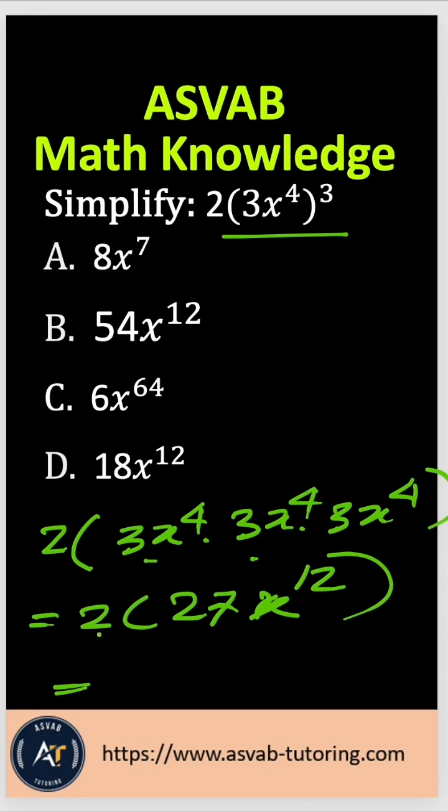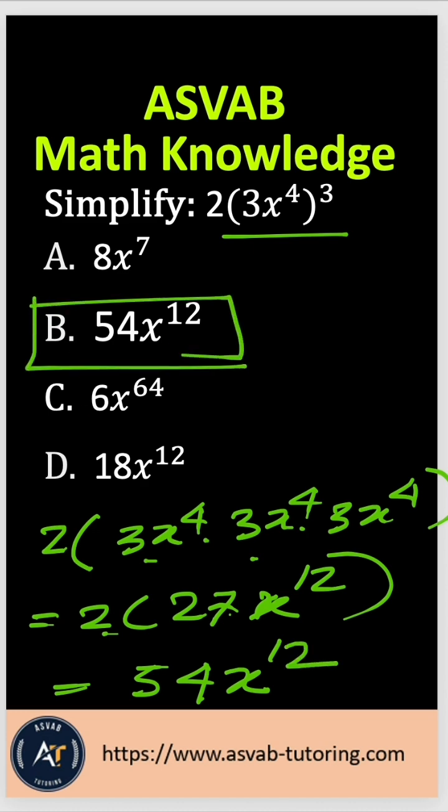Now you have to multiply that again. 27 times 2 is 54, x to the 12th power. So with that the correct answer is option B.